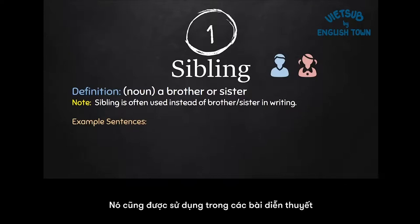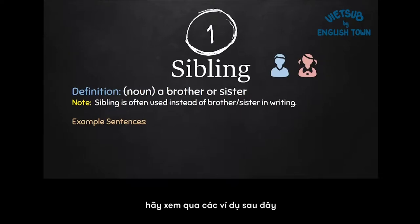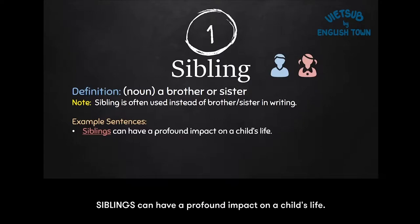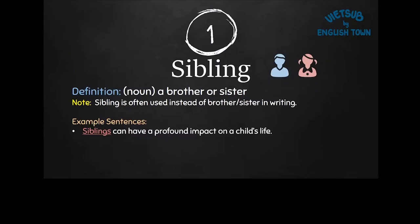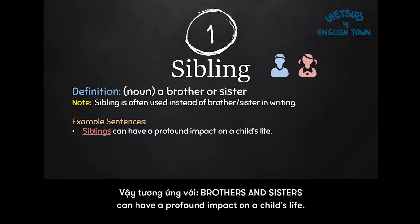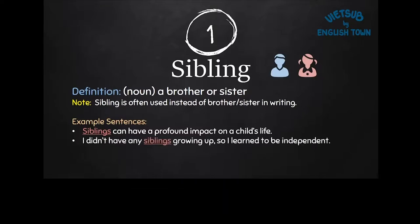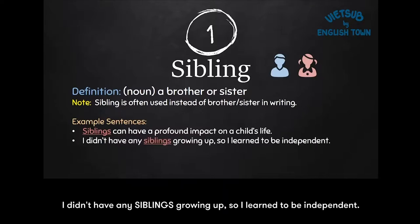It's also used that way in speech. Let's take a look at some example sentences. First, siblings can have a profound impact on a child's life — so brothers and sisters can have a profound impact on a child's life. And profound means big. I didn't have any siblings growing up, so I learned to be independent.